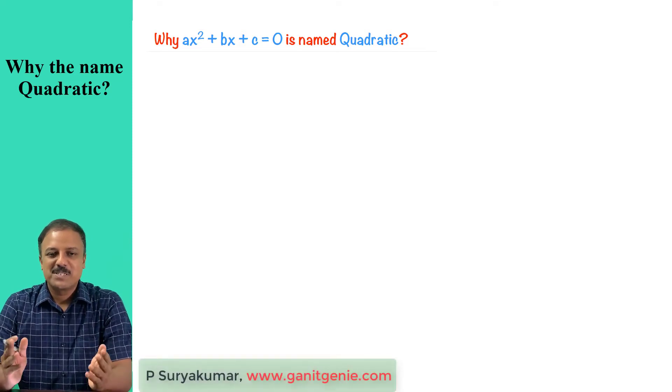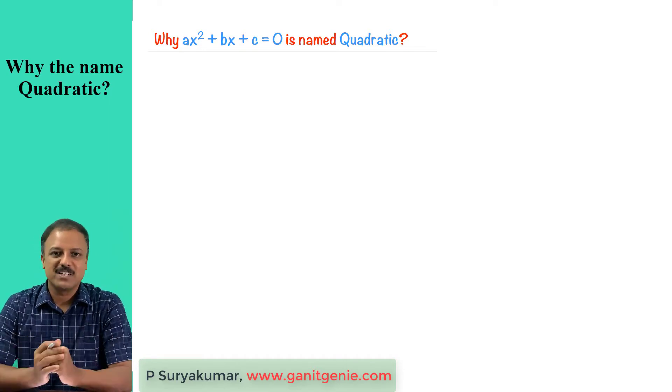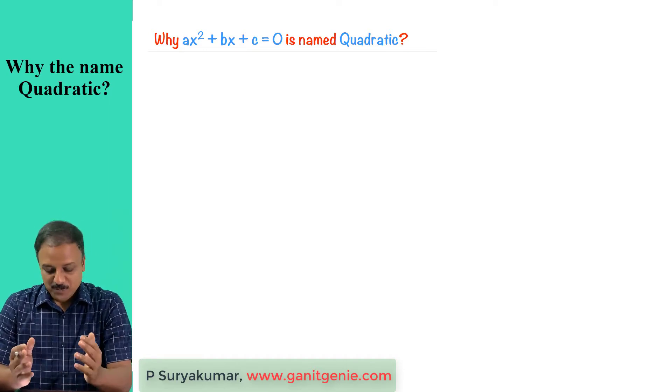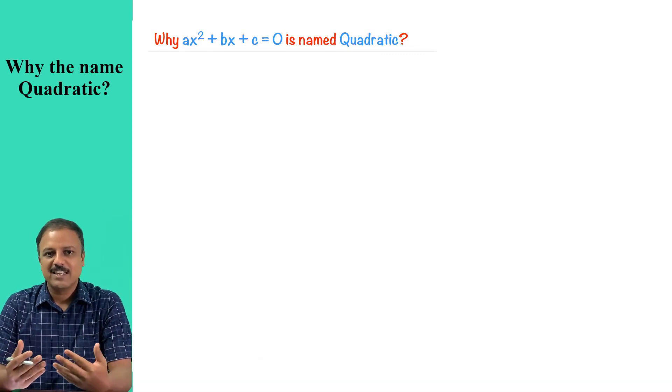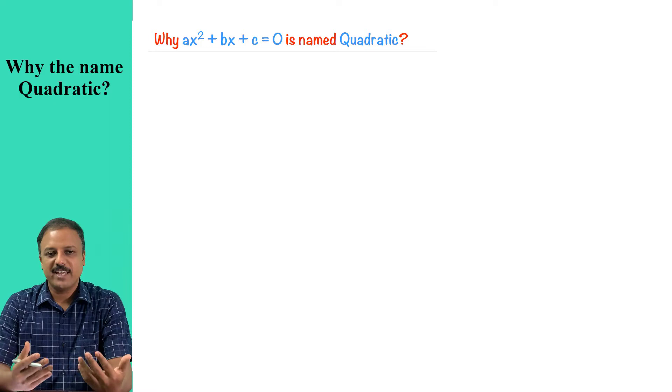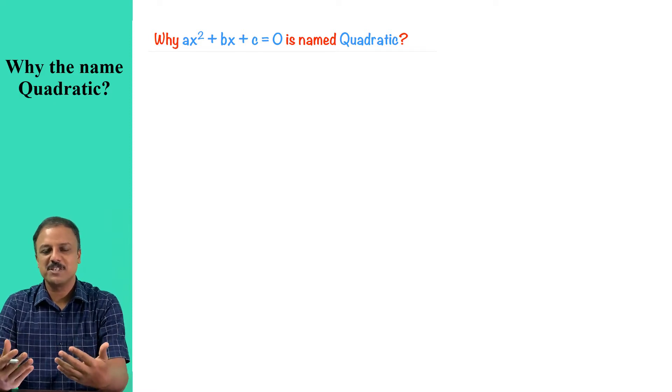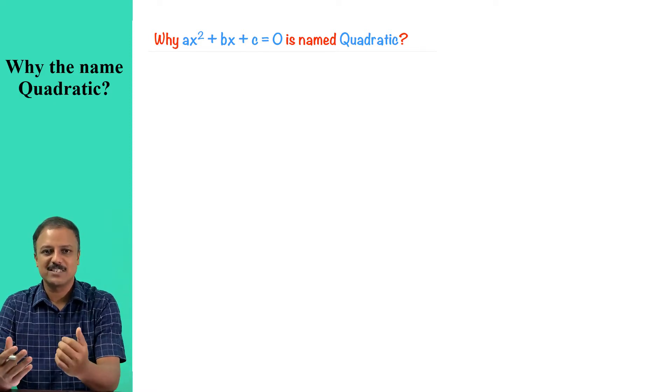Why ax squared plus bx plus c equals zero is called quadratic? So I'm just asking you, why the name quadratic? In normal textbooks, we have come across the statement saying any equation of this form ax squared plus bx plus c equals zero is called quadratic. But why?